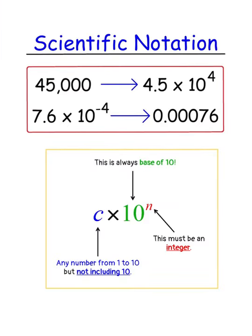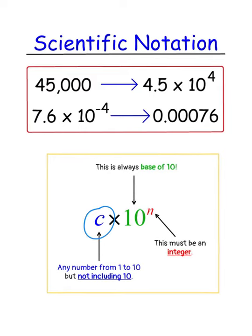Before we begin the application of the power of a product property, we need to know a little bit about scientific notation. 8th graders, if you haven't started this unit in science class yet, you will very soon. Scientific notation is a way to express a really big or really small number with only one or more digits — it is a number between 1 and 10, meaning there's one digit before a decimal, times 10 to an exponent.